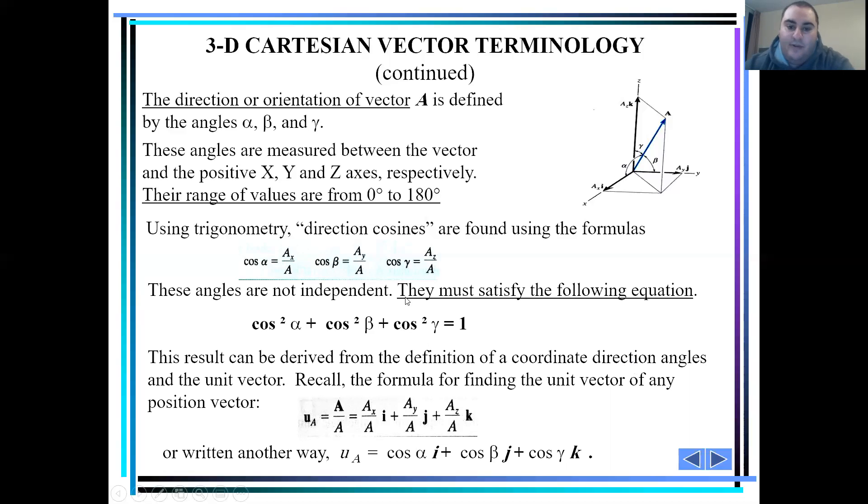So, recall the formula for finding the unit vector of any position vector, which is A vector over A. This equals ax over A times i plus ay over A times j plus az over A times k. Looking back to the direction cosines, we can write the unit vector as cosine alpha i plus cosine beta j plus cosine gamma k.